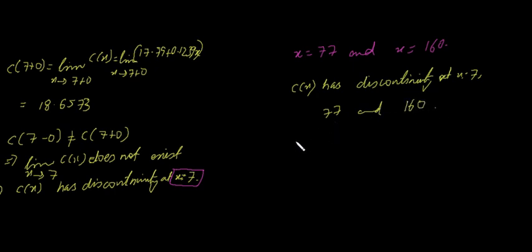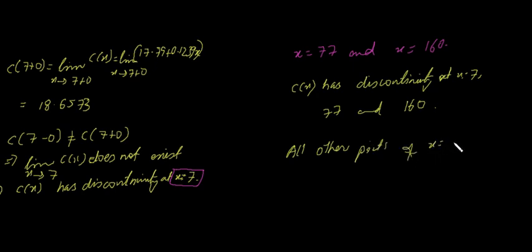All other values of x — that is, all values except x equals 7, 77, and 160 — are points of continuity.